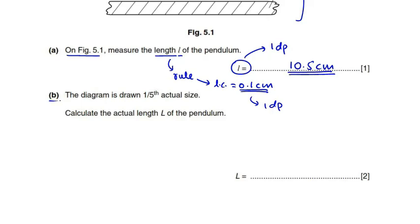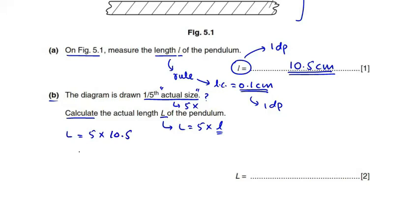Part b says the diagram is drawn one-fifth actual size. This means the actual size of the objects shown in the diagram is five times greater. Calculate the actual length capital L of the pendulum. The actual length capital L is five times the measured length: 5 × 10.5 = 52.5. So the actual length capital L of the pendulum is 52.5 centimeters.